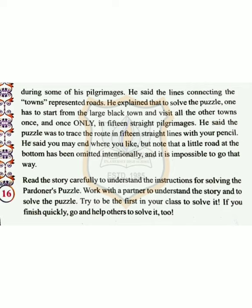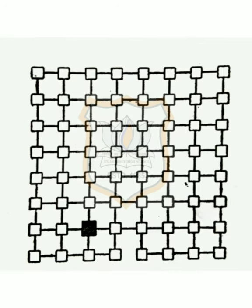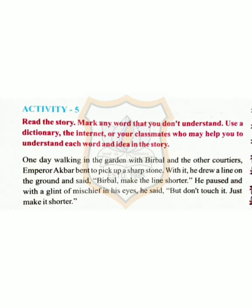He explained that to solve the puzzle, one has to start from the large black town and visit all the other towns once and once only, in 15 straight lines with your pencil. You may end where you like, but note that a little road at the bottom has been omitted intentionally, and it is impossible to go that way. Dear children, read the story carefully, understand the instructions, and then solve the puzzle.